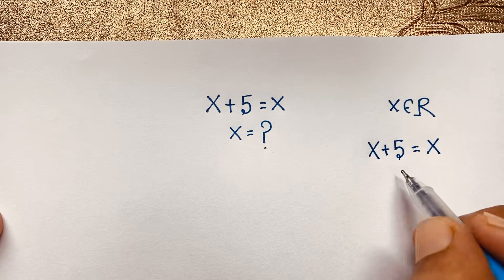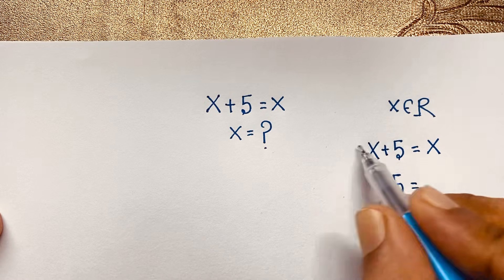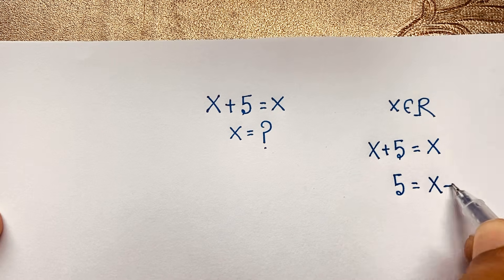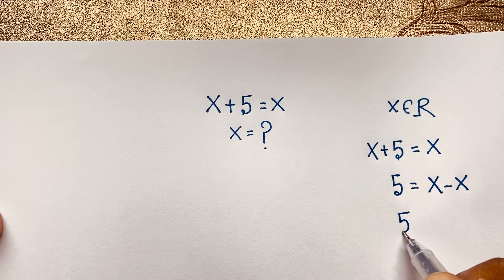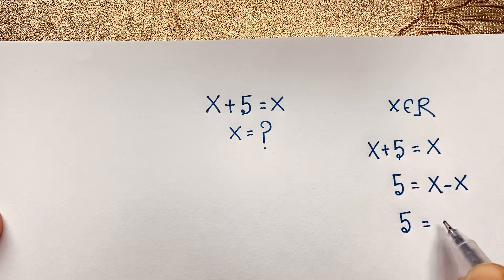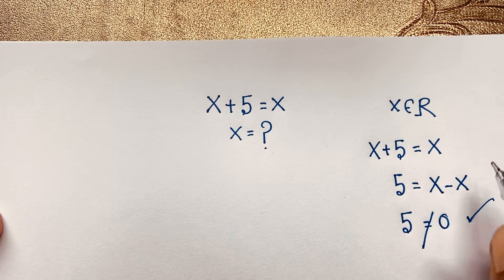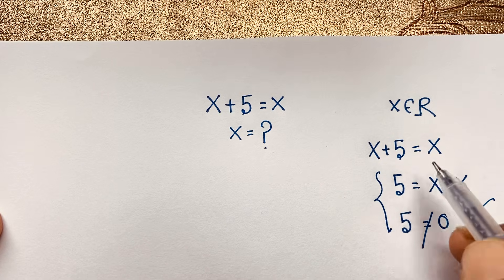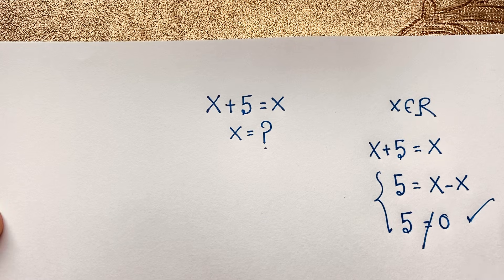Now, you can see if I move this x to this side, it will be negative x. So we get 5 is equal to 0. But 5 is not equal to 0, so you cannot solve this question using this method. But how do we solve this interesting math question?